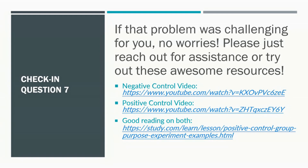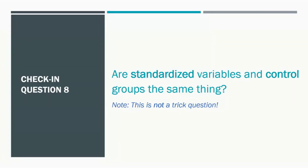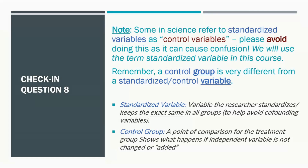Check-in number eight: are standardized variables and control groups the same thing? This is not a trick question. Some people in science refer to standardized variables as control variables, which can make things very confusing, because a control variable is very different from a control group. Please avoid referring to standardized variables as control variables — we will use the term 'standardized variable' in this course. Remember, a control group is very different from a standardized or controlled variable.